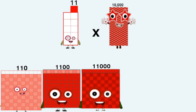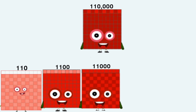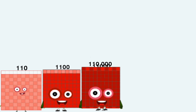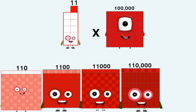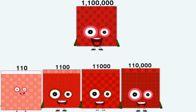11 times 10,000 equals 110,000. 11 times 100,000 equals 1,100,000.